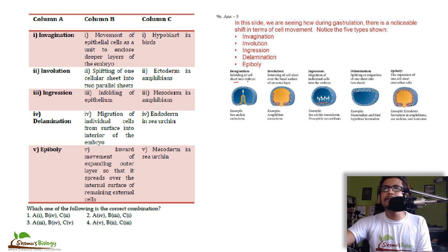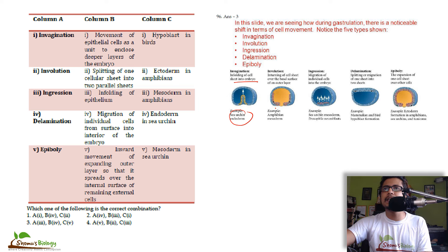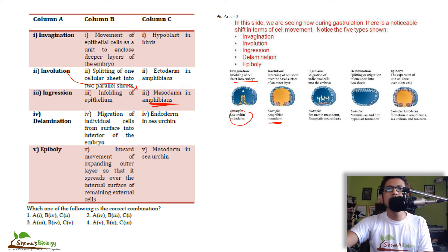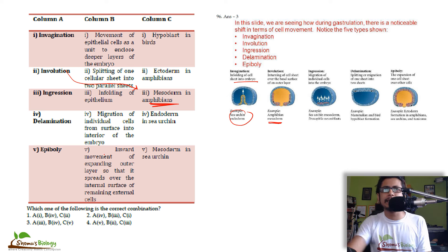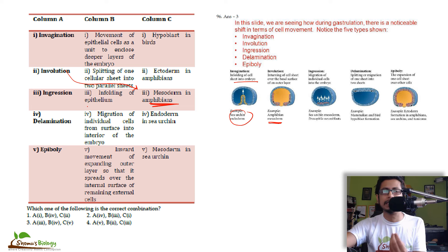Invagination is infolding of a cell sheet into the embryo — the sea urchin ectoderm is formed this way. Involution is the inturning of a cell sheet over the basal surface of the outer layer — this is how mesoderm is formed in amphibians. So amphibian mesoderm formation is involution. You don't need to read all five processes if you know two or three of them — two correct matches are enough to narrow down the answer.